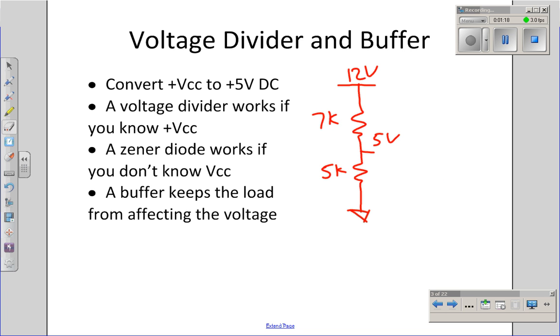To buffer it, to keep that from happening, throw in a buffer, an op amp in voltage follower mode. The input impedance for an op amp is large, approximately 10 to the 12 ohms, large enough you don't have to worry about it. The output impedance should be small, so the op amp can drive your load without changing the voltage on the voltage divider.